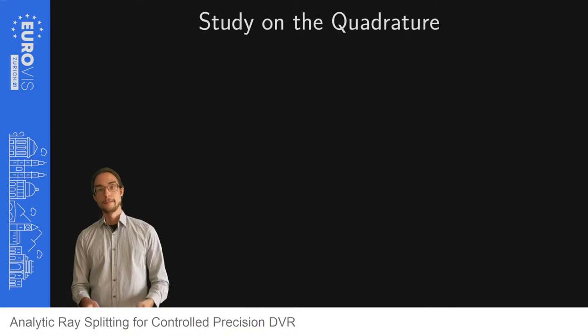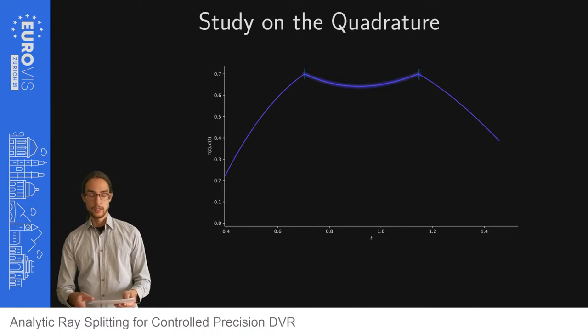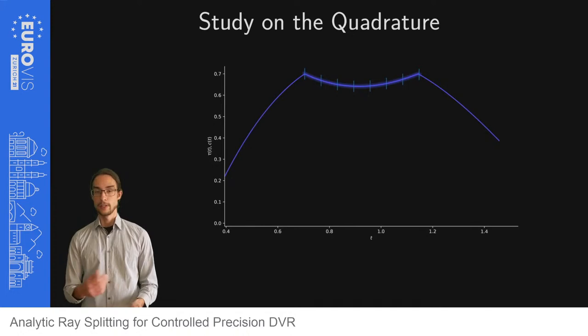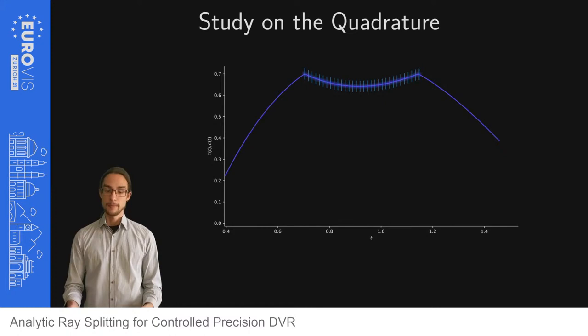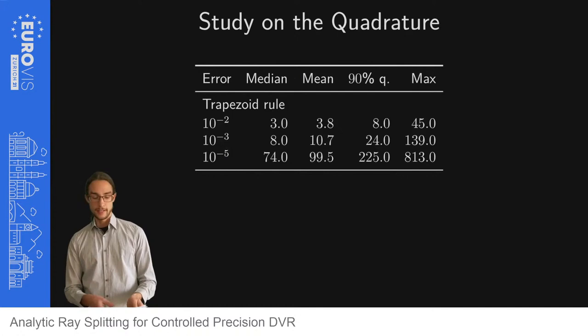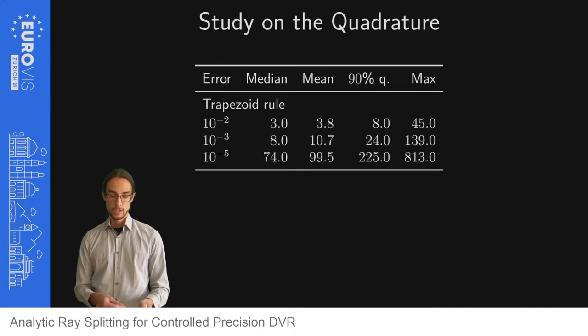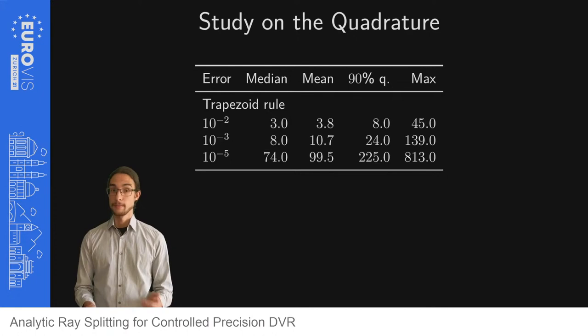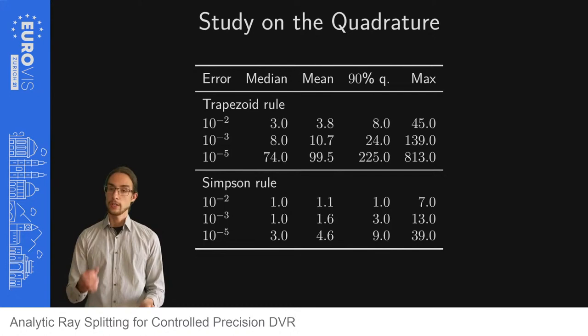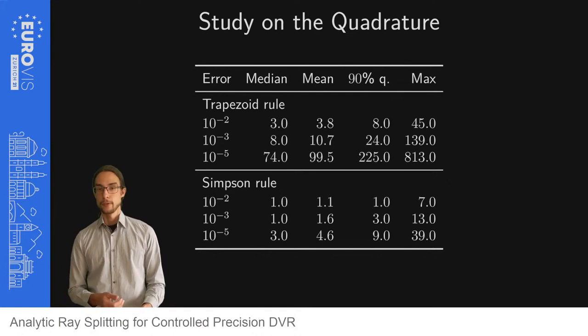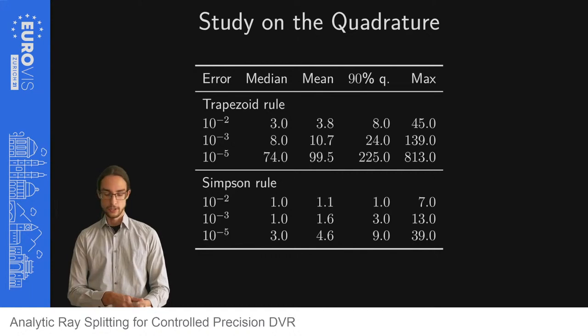Next, we analyze the quadrature methods in more detail. The integral per segment has no analytical solution and has to be evaluated via quadrature. However, we can compute an upper limit on the number of quadrature steps. With the trapezoid rule, up to a few hundred steps might be needed. For Simpson quadrature, even for a small allowed error, less than 10 steps are needed for most segments. For these low numbers of quadrature points, the runtime is dominated by splitting the ray at the control points of the transfer function. Using a higher order quadrature brings no advantage.